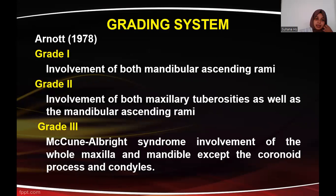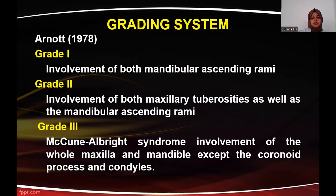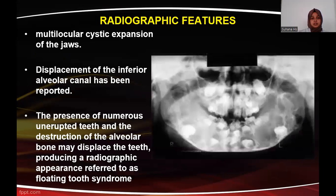In 1978, Arnott classified cherubic patients into three grades. In Grade 1, there is involvement of both mandibular ascending rami. In Grade 2, both maxillary and mandibular structures are affected — involvement of both tuberosities in the maxilla and both rami in the mandible. In Grade 3, also known as McKown-Albert syndrome, there is involvement of the whole maxilla and mandible except the coronoid and condylar processes.